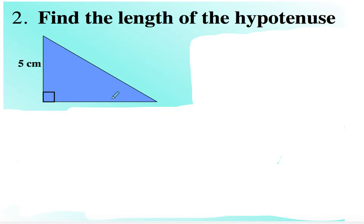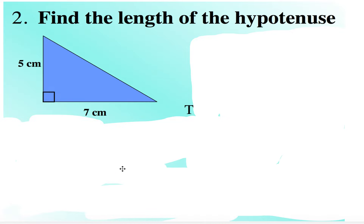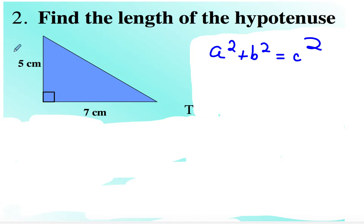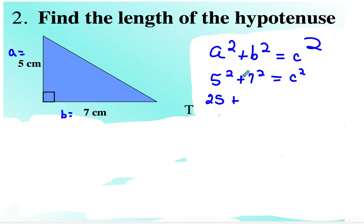The next one says find the length of the hypotenuse. On this one, if we want to find the length of the hypotenuse, we have the legs 5 and 7. We're going to use the Pythagorean theorem: A squared plus B squared is equal to C squared. So we're going to have 5 squared plus 7 squared is equal to C squared. 5 squared is 25, and 7 squared is 49. Adding them together, I get 74.